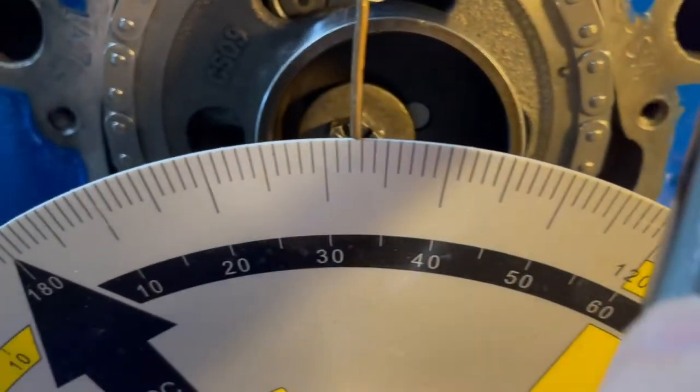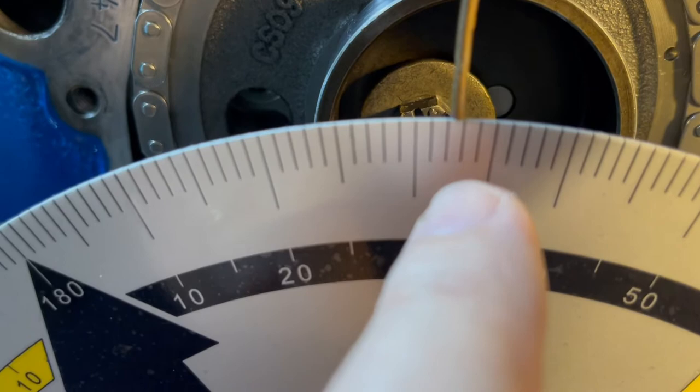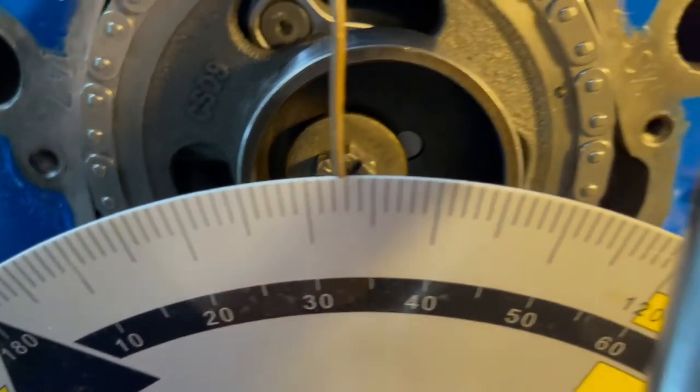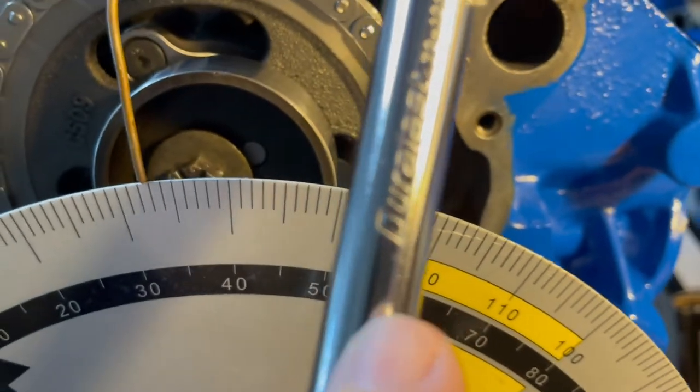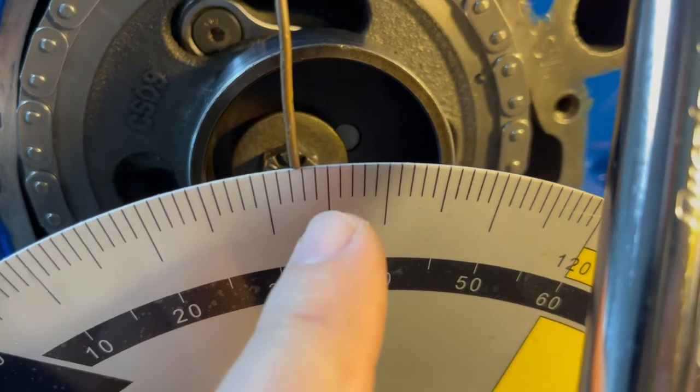And then where it started to go down and I was at 50 thousandths lift on the downside of the cam lobe, it was 120, 30, 145, 147.